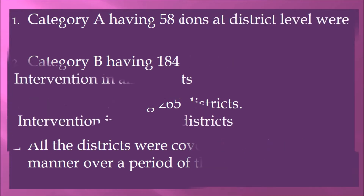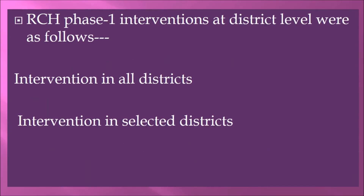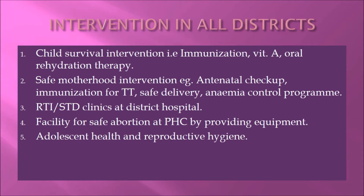RCH Phase 1 interventions at the district level were divided into: interventions in all districts and interventions in selected districts. In all districts, child survival interventions included immunization, Vitamin A, oral rehydration therapy, and safe motherhood interventions such as antenatal checkups, immunization for tetanus, safe delivery, anemia control program, and reproductive tract infection and sexually transmitted disease clinics at district hospitals.